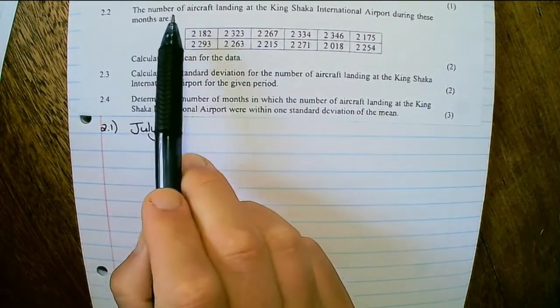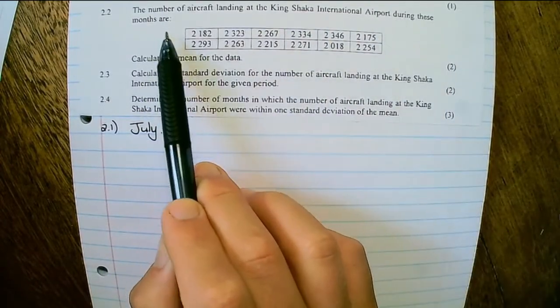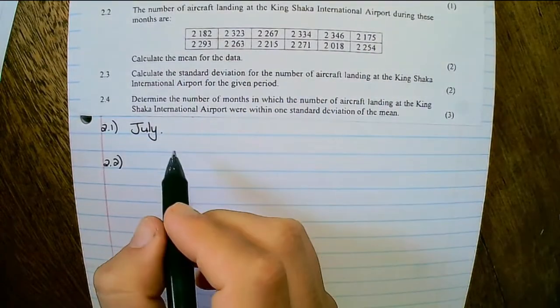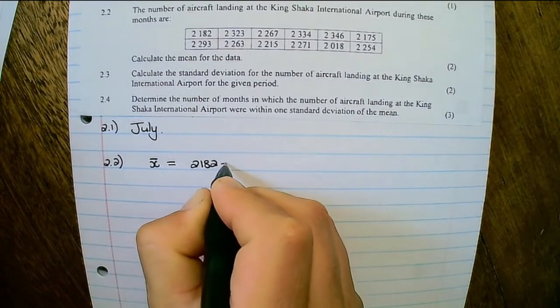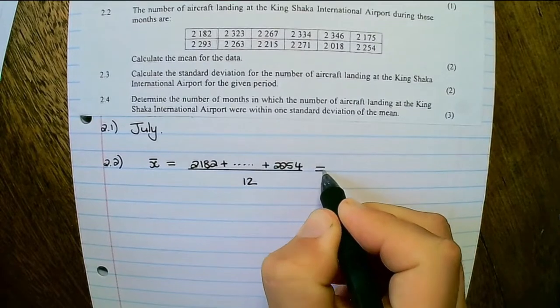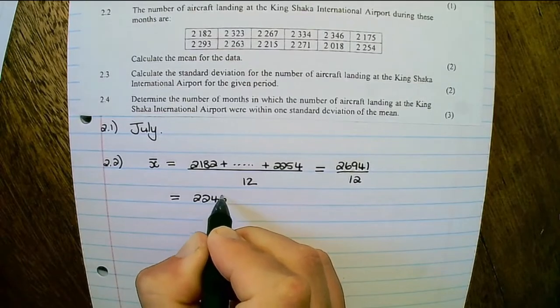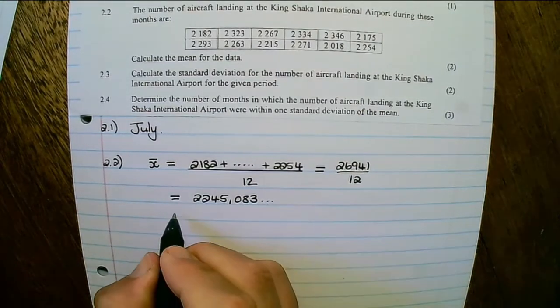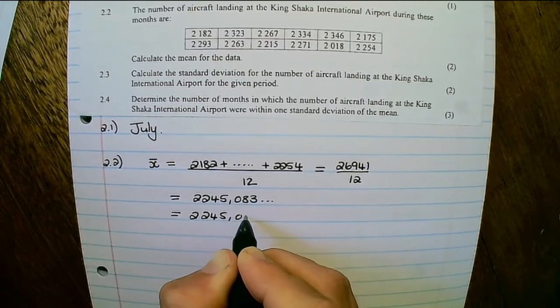Question 2.2: The number of aircraft landing at the King Shaka International Airport during these months are these values. Calculate the mean of the data. To calculate the mean we need to add up all of the values and then divide by 12. That equals 2245.083 aircraft, and if we round off to two decimal places it's 2245.08.